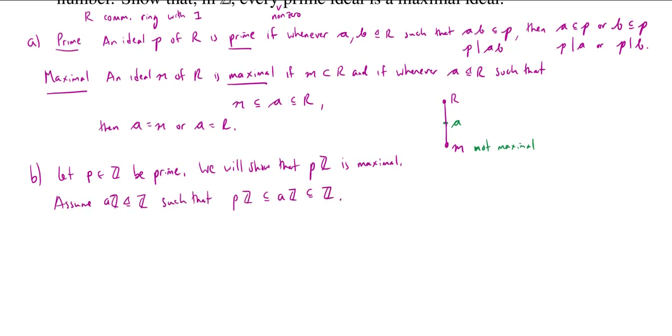Now, because PZ is contained in AZ, and P is certainly an element of PZ, right? You can write P as P times 1. Then we conclude that P is an element of AZ, which tells me that I can write P as A times something. So this implies there exists, say, some U in Z,